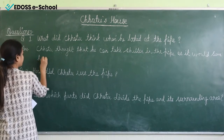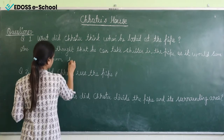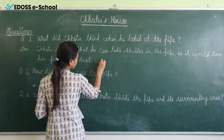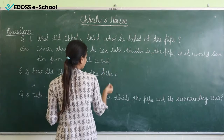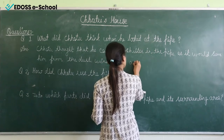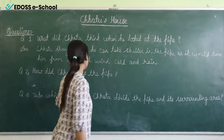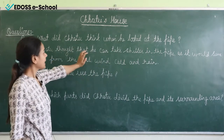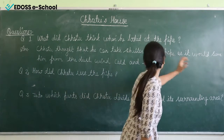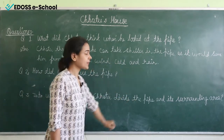So the first answer is: Chotu thought that he can take shelter in the pipe as it would save him from the dust, wind, cold and rain. Now the second question: How did Chotu use the pipe?